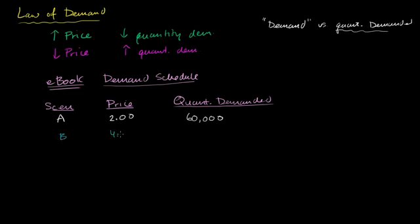Scenario B, I could raise the price by $2, so it's now $4. And then that kills off a lot of the demand. Now the quantity demanded goes down to 40,000 people downloading it. Then I could go to scenario C. If I raise by another $2, so now I'm at $6. Now that lowers the quantity demanded to 30,000. I'll do a couple more of these. Scenario D, I raise another $2, so I get to $8 now. Now the quantity demanded goes down to 25,000.